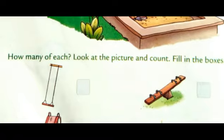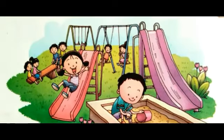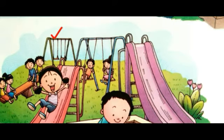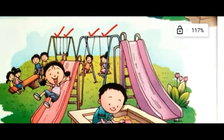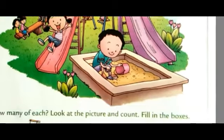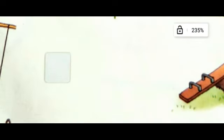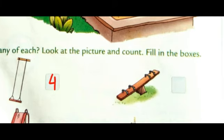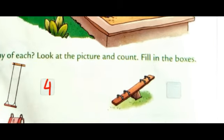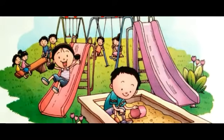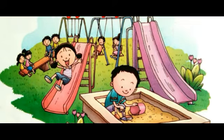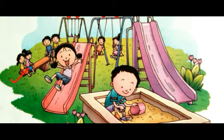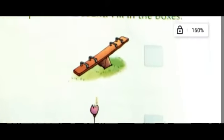The first one is swing. Let's see how many swings are there. We will count: 1, 2, 3, 4 — total four swings are there. We will write 4 in the space given. In the same way, we need to count for the next picture, which is seesaw. Let's see how many seesaws are here — only 1 is here, so we will write 1.